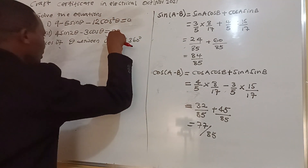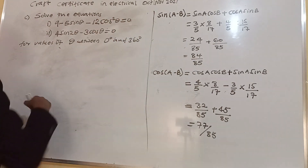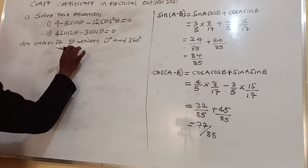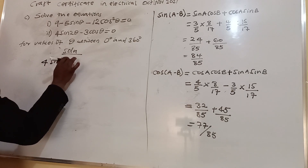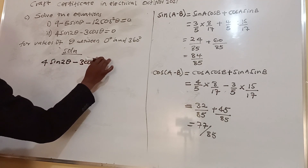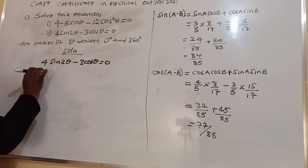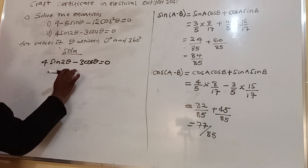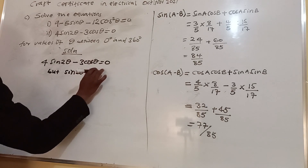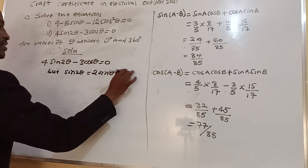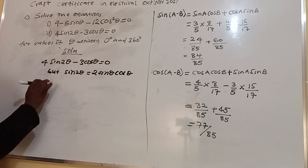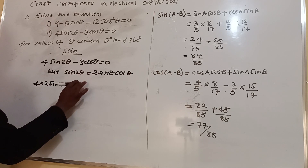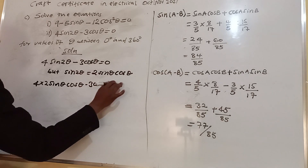We will work on the equation: 4 sin 2θ minus 3 cos θ equals 0. From the compound angle identities, sin 2θ is equal to 2 sin θ cos θ.